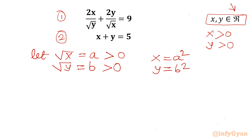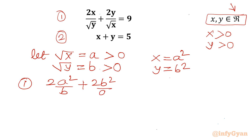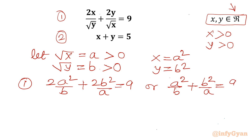Let us apply the substitution. The first equation becomes 2a squared over b plus 2b squared over a equals 9, which simplifies to a squared over b plus b squared over a equals 9 over 2 after dividing both sides by 2. Taking the LCM gives a cubed plus b cubed divided by ab equal to 9 over 2.